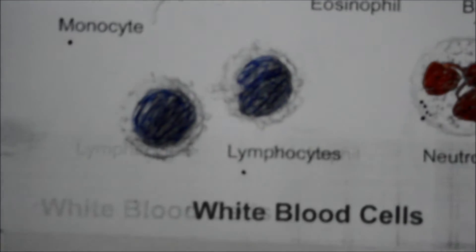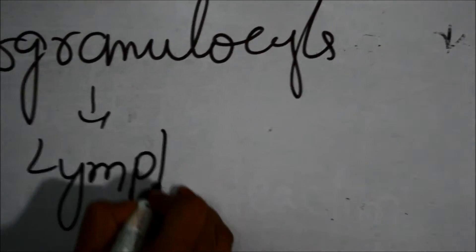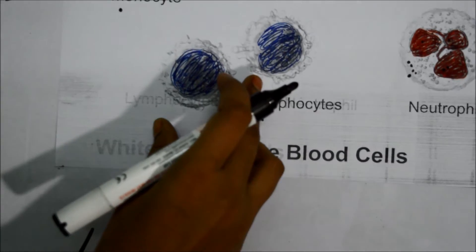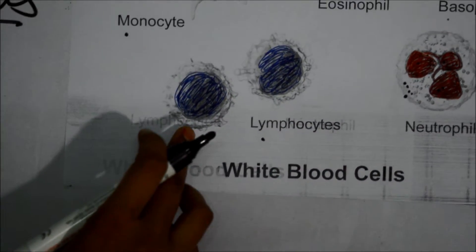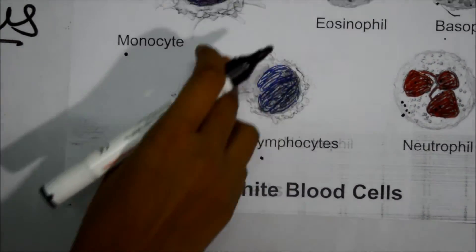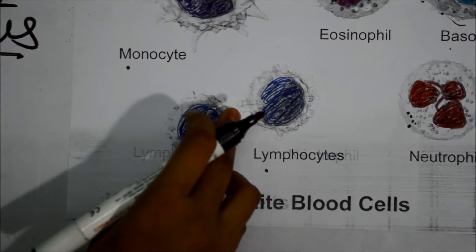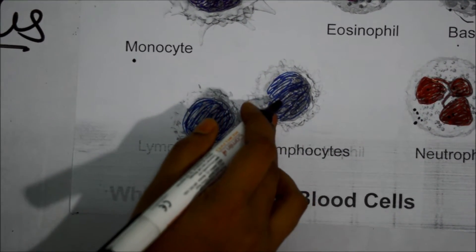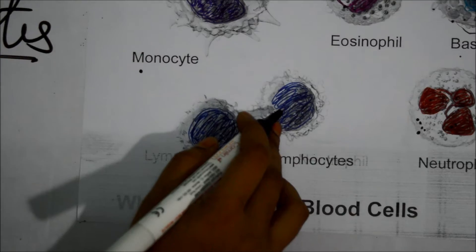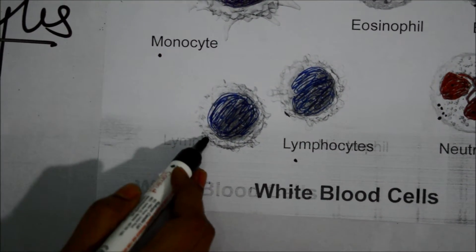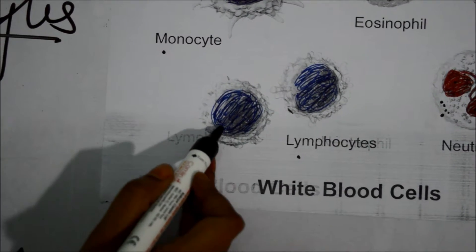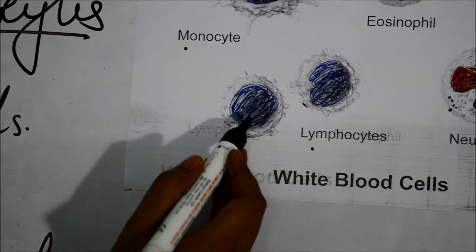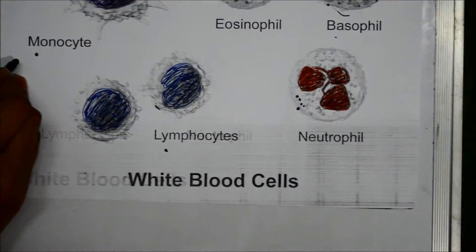Let us see about the lymphocytes. These are the smallest cells of all the white blood cells. These cells have a thin layer of cytoplasm around a large nucleus. These cells recognize antigens that enter the blood and produce antibodies against them. These cells protect the body against viral and infectious diseases.